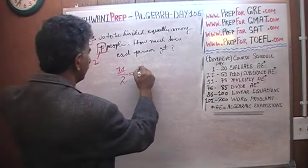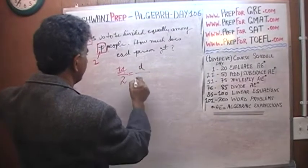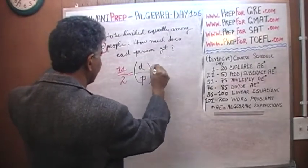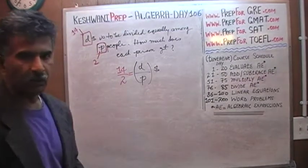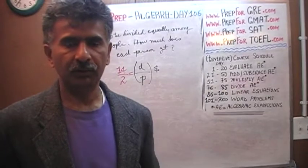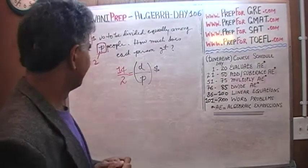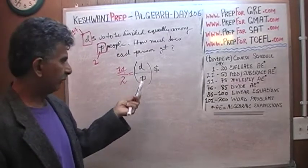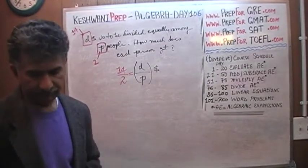We have D dollars to be divided among P people. So each person gets D over P dollars. D divided by P. D is the value which we do not know. P has a value. So whatever D has the value of, that value divided by the value of P, that's how much each person gets. D over P. And that's it.